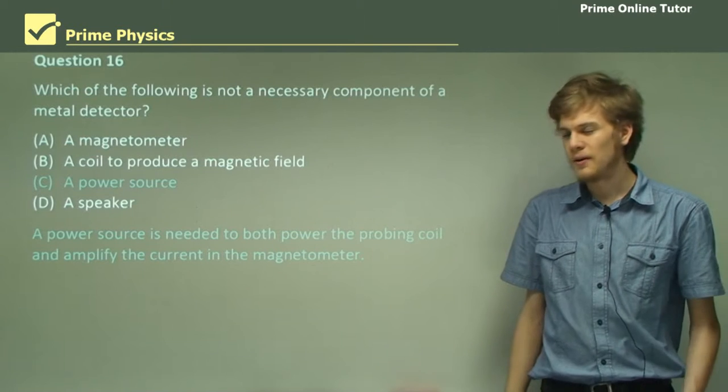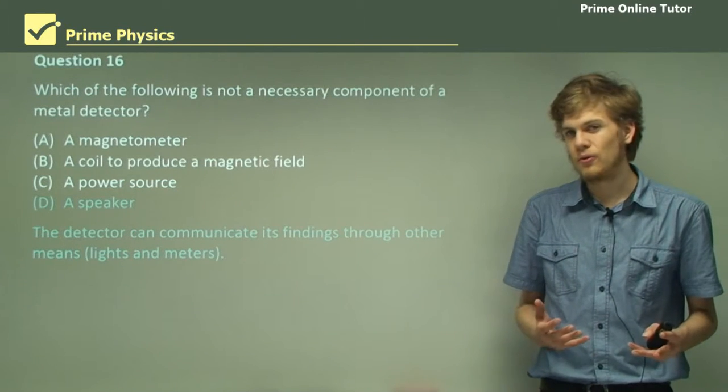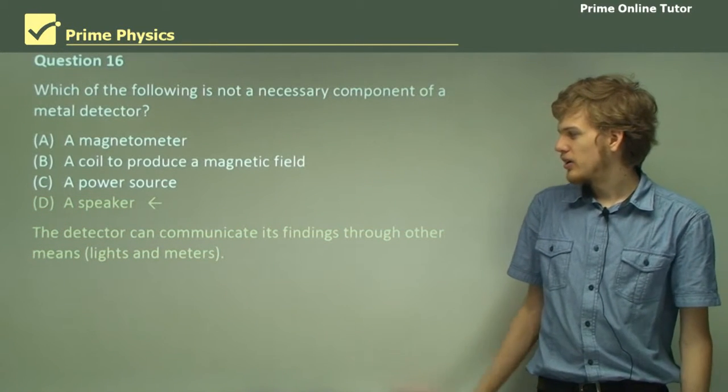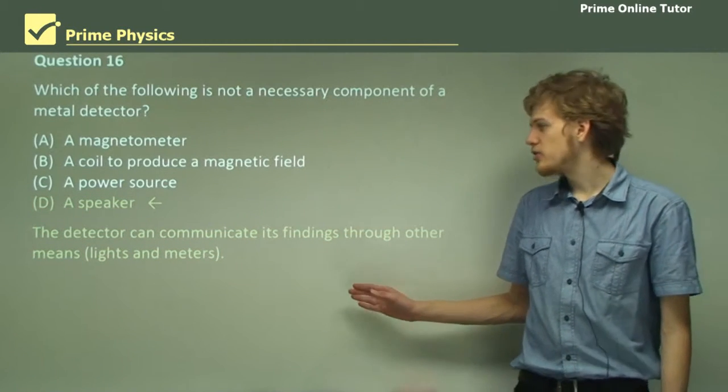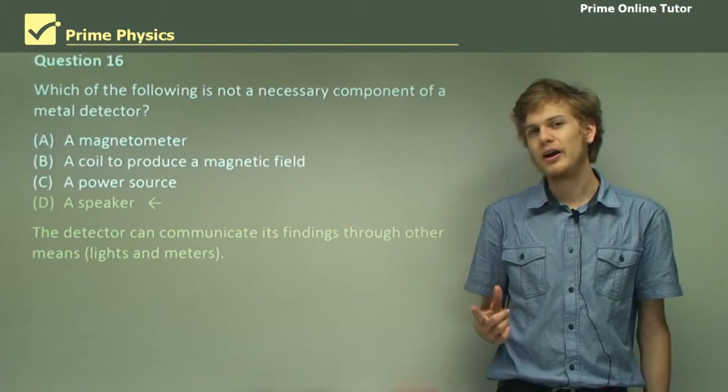The last option then is a speaker, and this is not needed for a metal detector, so it is the correct answer. The detector doesn't need to communicate its findings with a speaker. It can communicate them with a blinking light or maybe a needle on a dial.